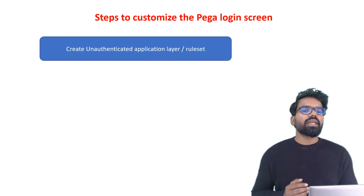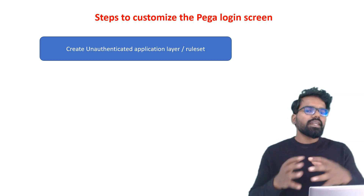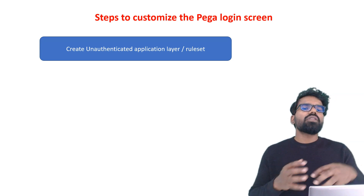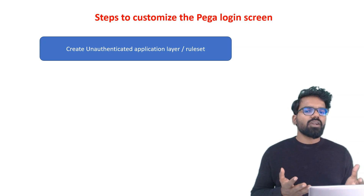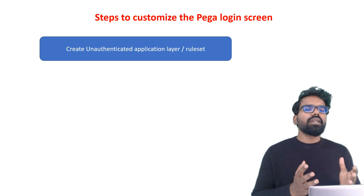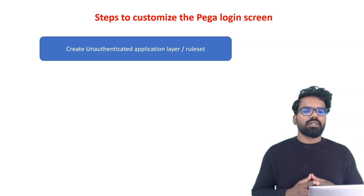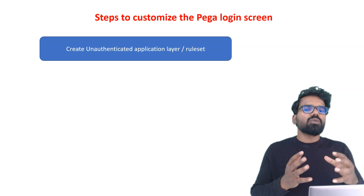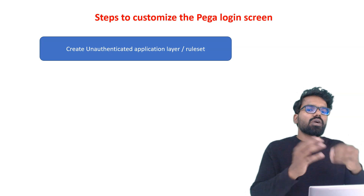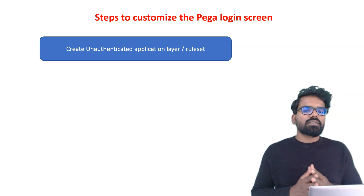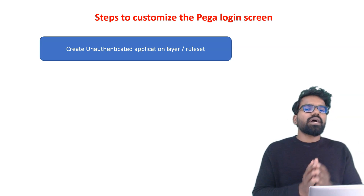The first step is you need to create an unauthenticated application layer or ruleset. An unauthenticated application layer holds the rules used for unauthenticated users — also referred to as guest users. Before login, all users can be considered unauthenticated users. You need to provide some screens and do some processing for them, so you need to create rules and a ruleset to save those rules.